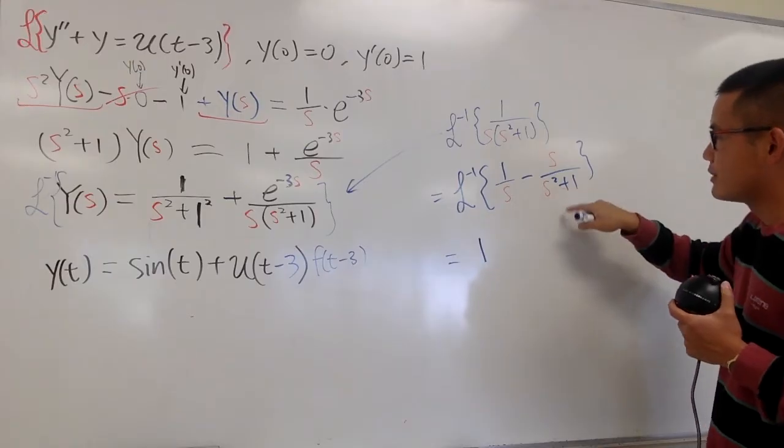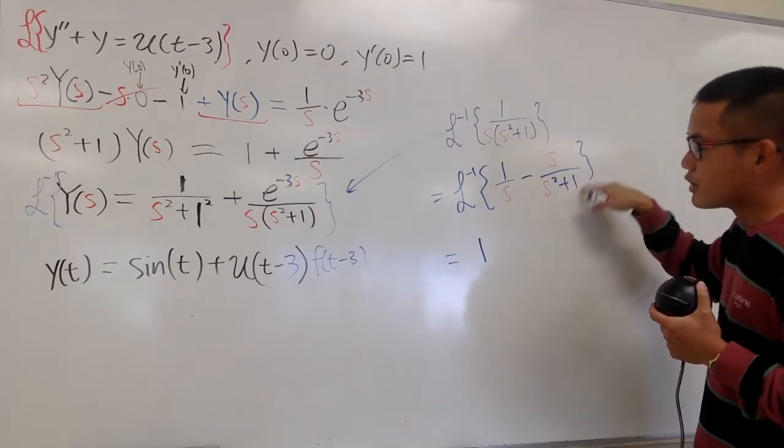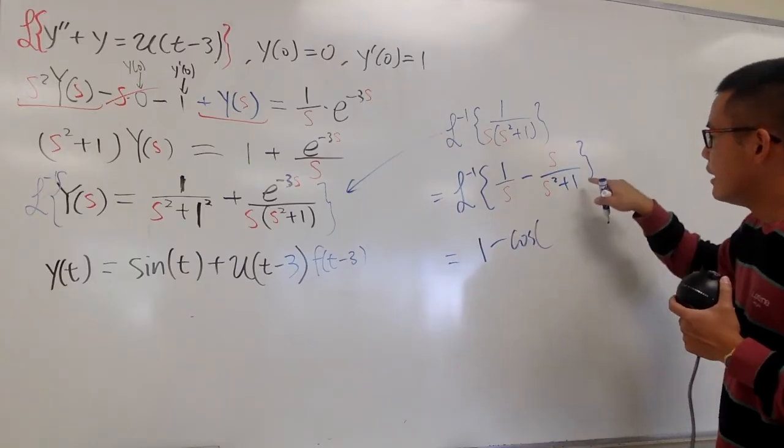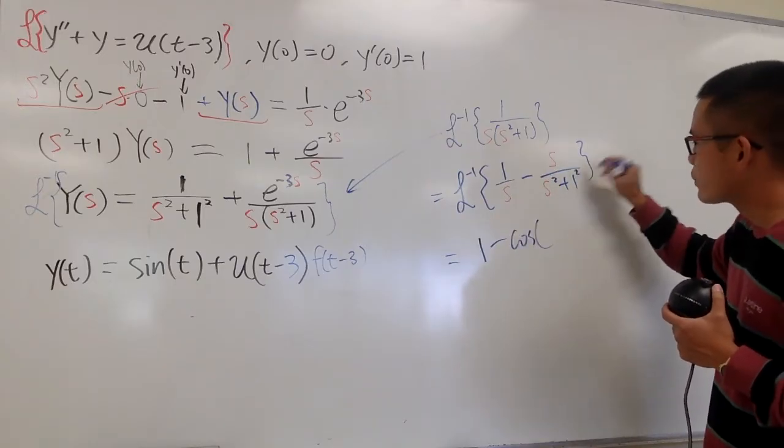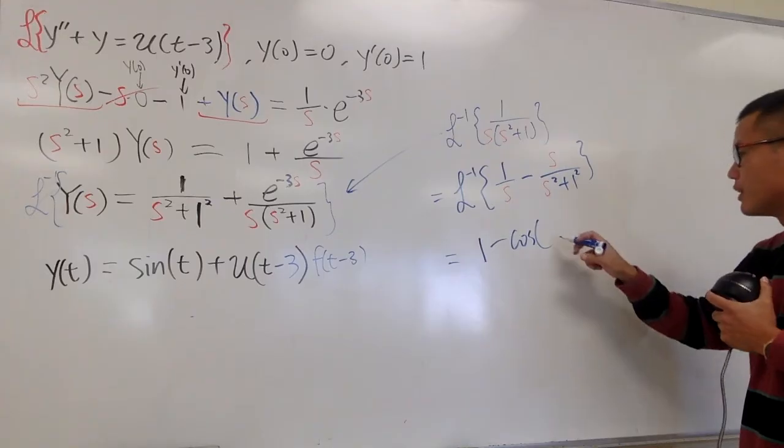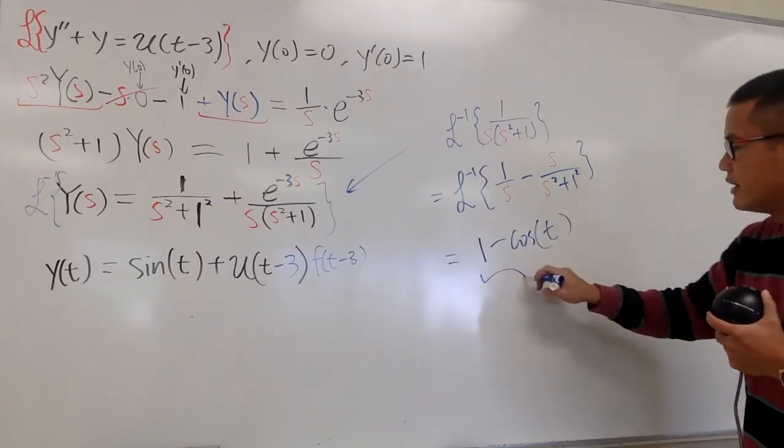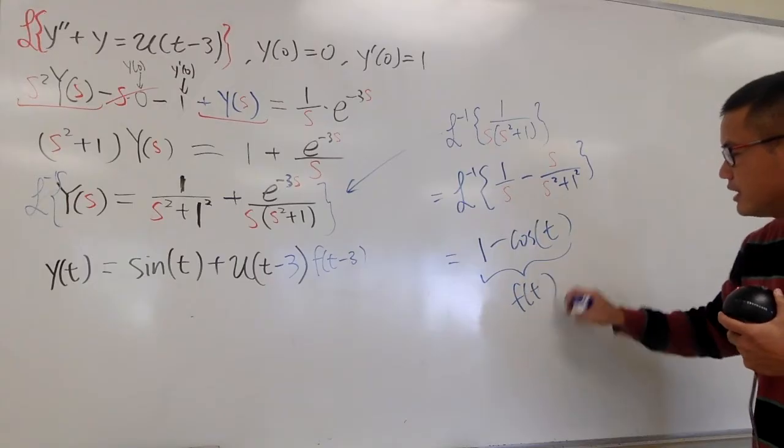So minus cosine, and this is technically the same as 1 squared. So in another word, minus cosine t, just like that. And this guy is the f of t. And now, I just have to figure out what's f of t minus 3. Let me just indicate that I want the input to be t minus 3.